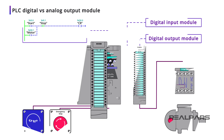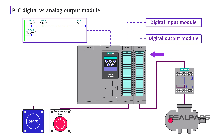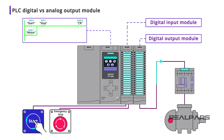The purpose of a PLC Digital Output Module is to operate or control a DC voltage physical device based on field device conditions connected to an input module and decisions made by the PLC program.